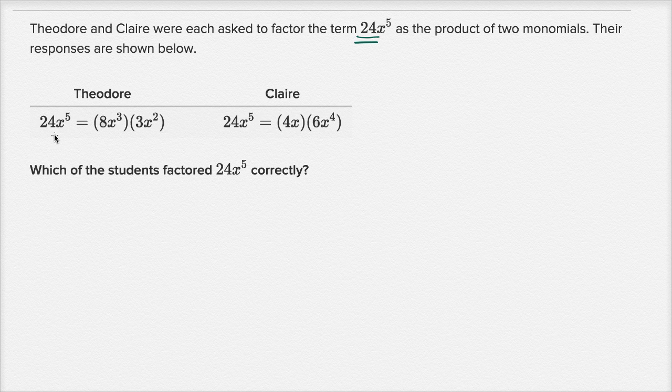So Theodore factored 24x to the fifth as being equal to 8x third times 3x squared. And Claire factored 24x to the fifth as being equal to 4x times 6x to the fourth. And then they asked us which of the students factored 24x to the fifth correctly.